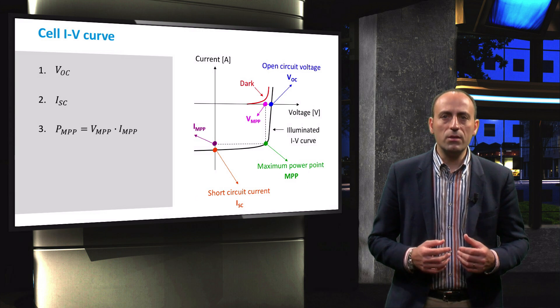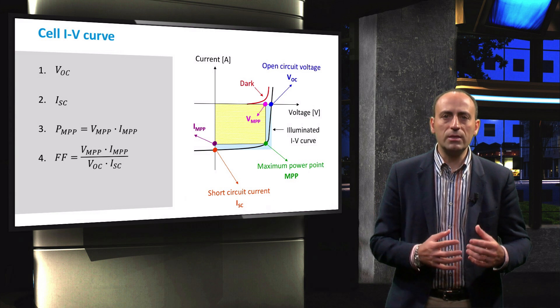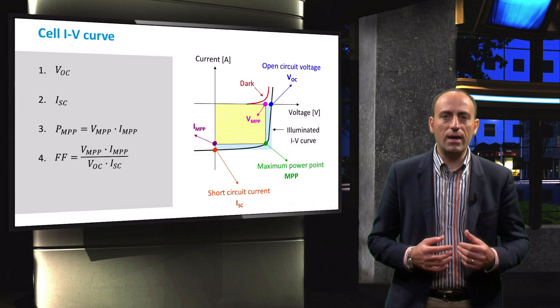With these parameters, we can determine the fill factor. The fill factor is the ratio between the maximum power generated by a solar cell and the product of the VOC and the ISC.